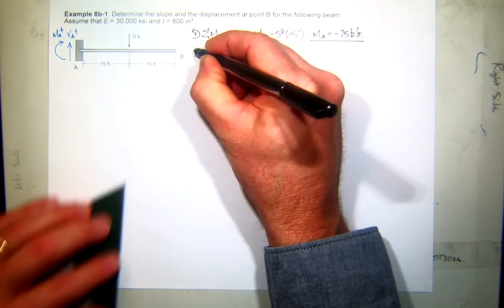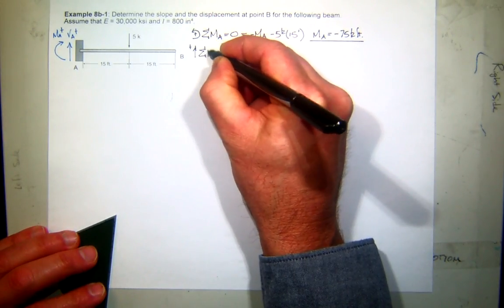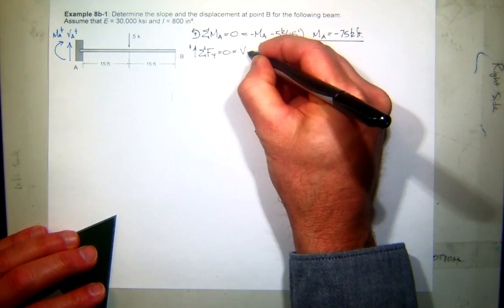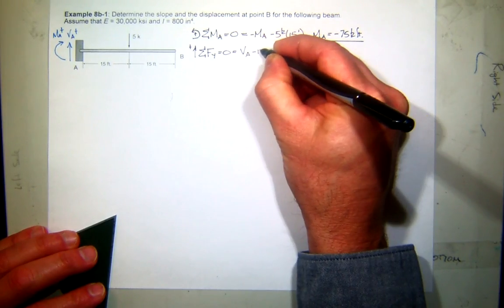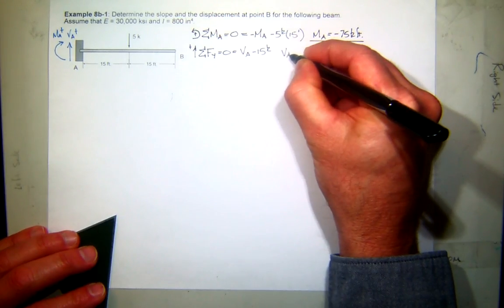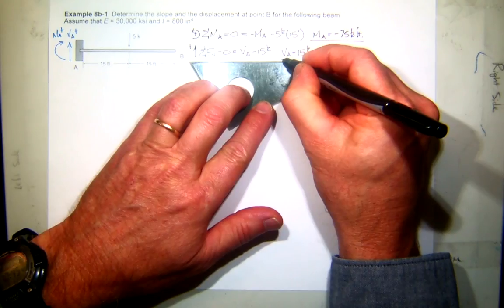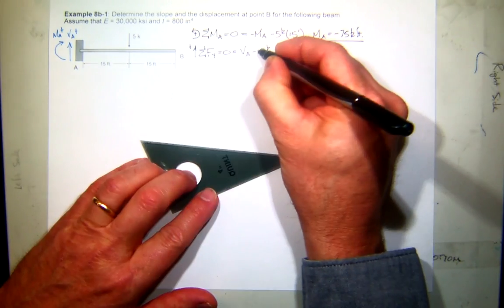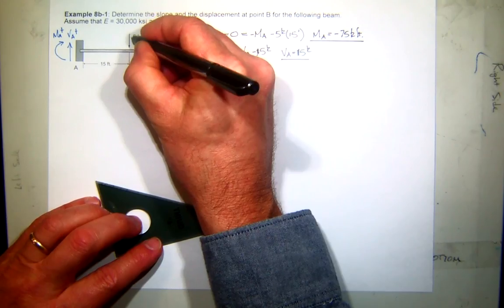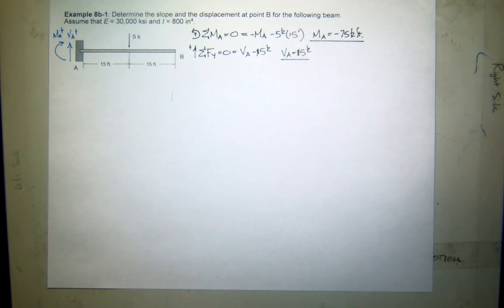And then if I sum forces in the y direction, assuming up for my sign convention as being positive, I have my shear at A acting up minus the 15 kip force acting down. So it looks like the shear at A is positive 15 kips. Oh, sorry. Thank you. Or I could just put a 1 there. Yeah, I'll put a little wiggly line there.